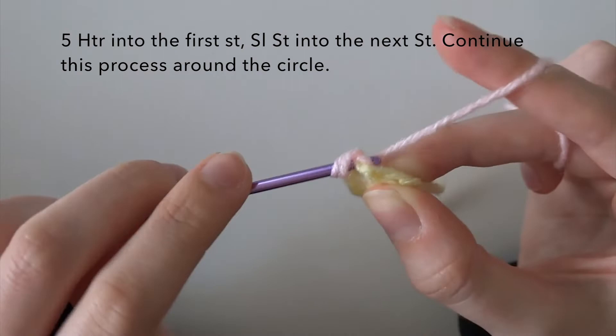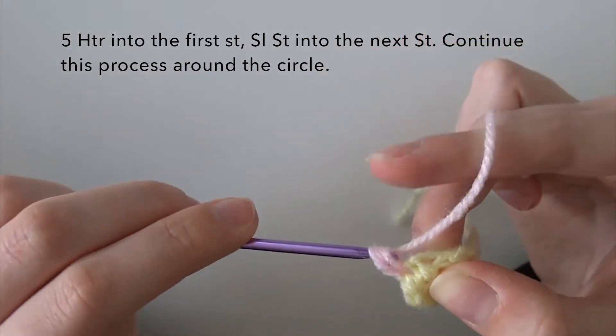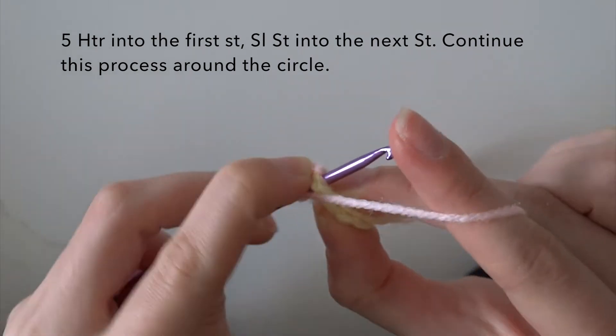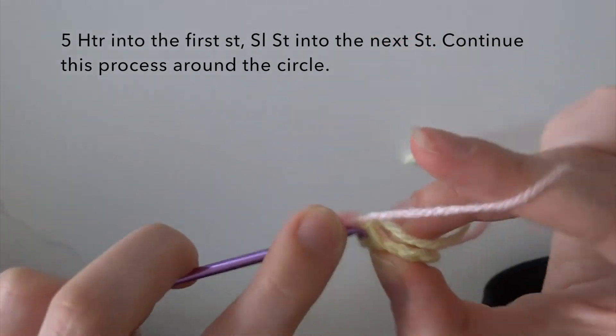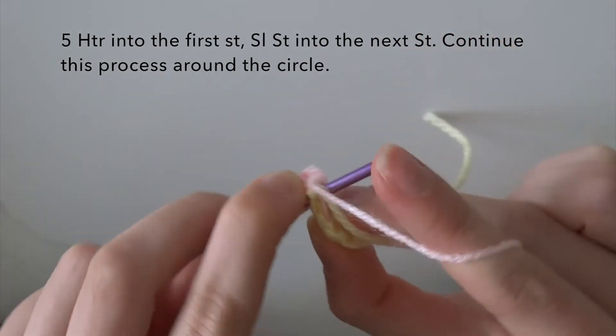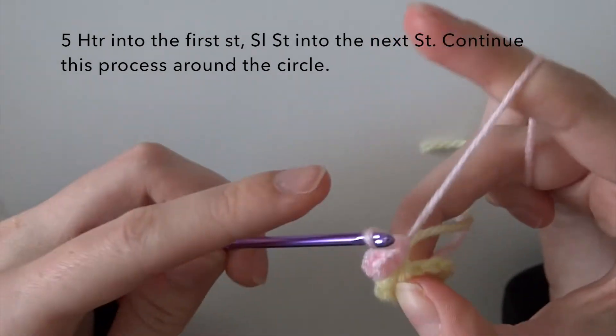For the next round we will be crocheting the petals onto the yellow flower bud and you do this by doing five half treble crochets into the first stitch and then slip stitch into the next stitch. You want to continue this process around the entire yellow circle.